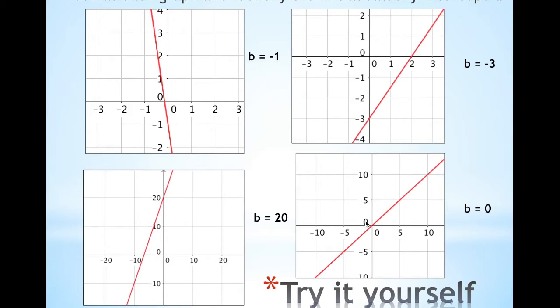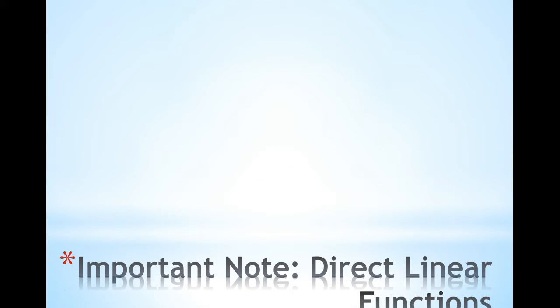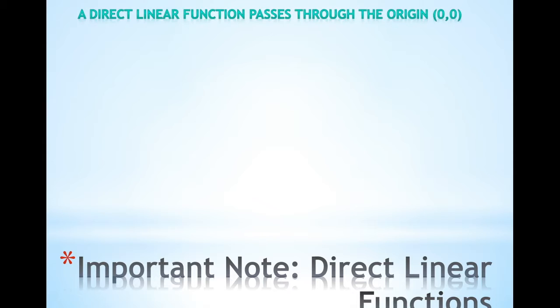And finally the B is actually 0 because it crosses through the y-axis at zero. Now based on the last example, I want to note something important about direct linear functions.